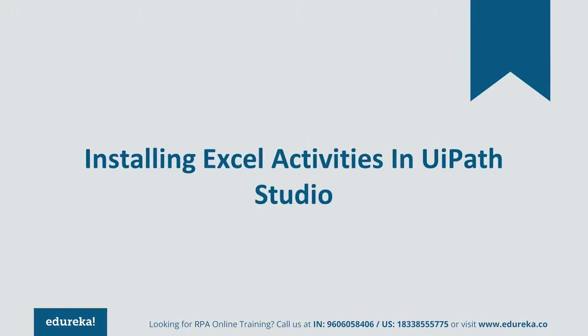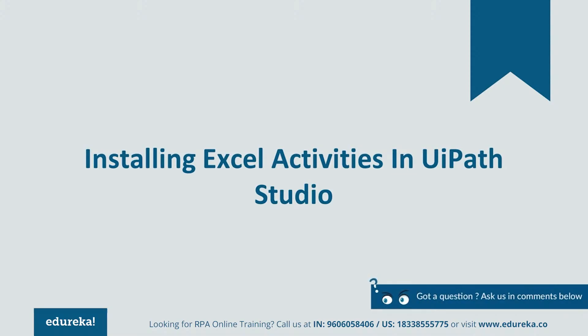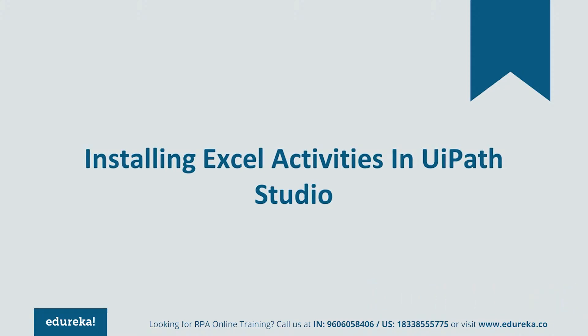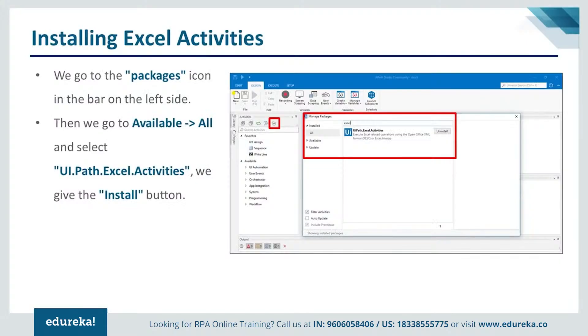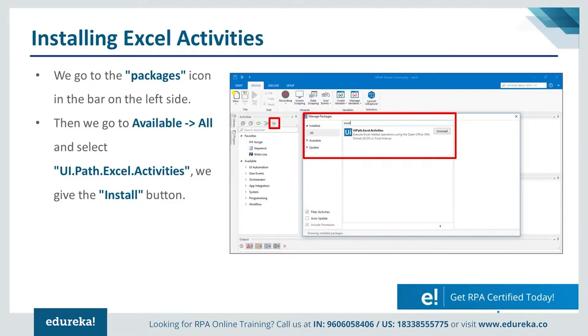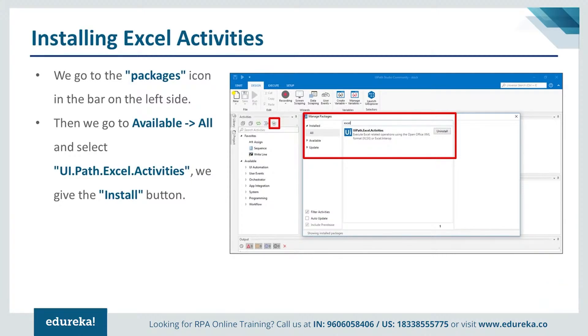How do we implement this Excel automation? That is really simple — you just have to implement it using a tool. Here we'll be using the UiPath tool to automate Excel activities. I'm assuming that all of you are well versed with the UiPath interface and workflow, passing variables between actions. These concepts will help you out throughout this tutorial.